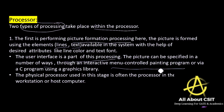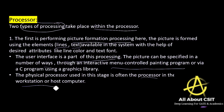The picture can be specified in a number of ways. Through interactive devices like menu control or painting programs, or by using C programming with a graphics library — you need to write some algorithms and coding. The physical processor used at this stage is similar to the processor in a workstation or host computer, with an additional graphics-supporting processing element.